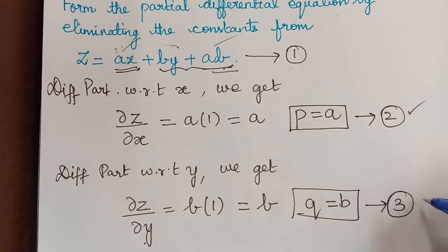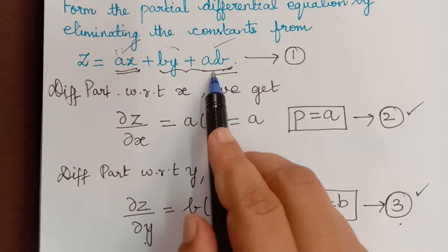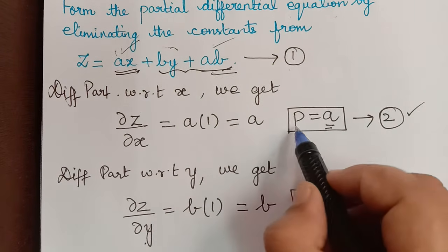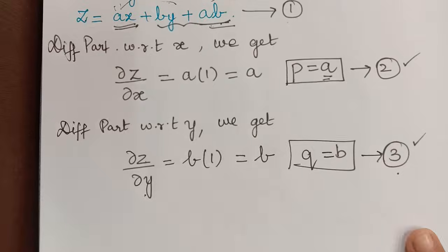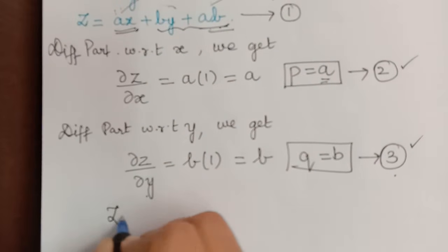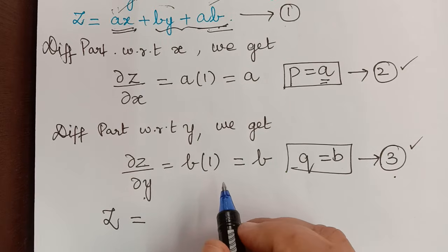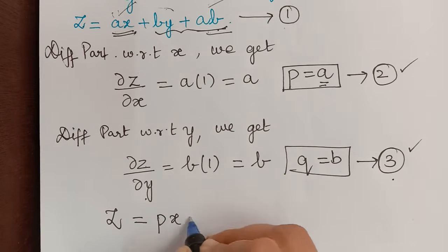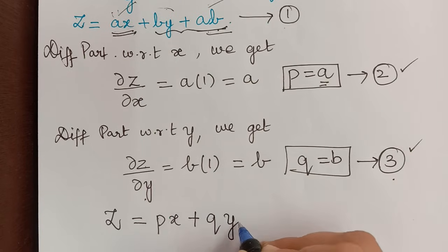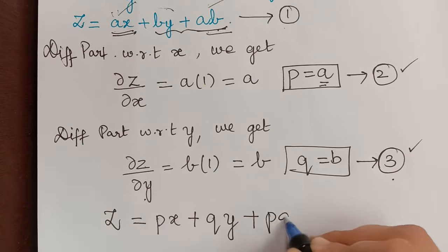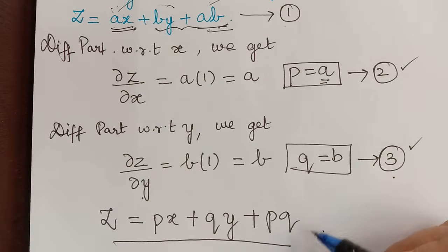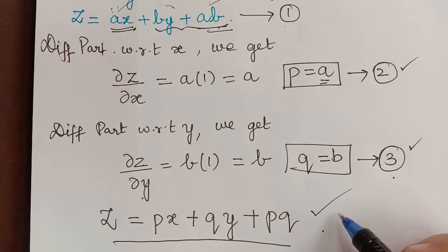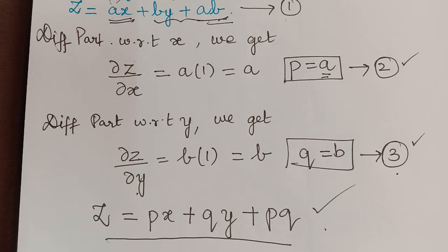Now we substitute equations 2 and 3 into equation 1: wherever we have a, we substitute p, and wherever we have b, we substitute q. So equation 1 becomes z = px + qy + pq. This is the required partial differential equation. In our next video, we shall solve more problems on this topic. Thank you.